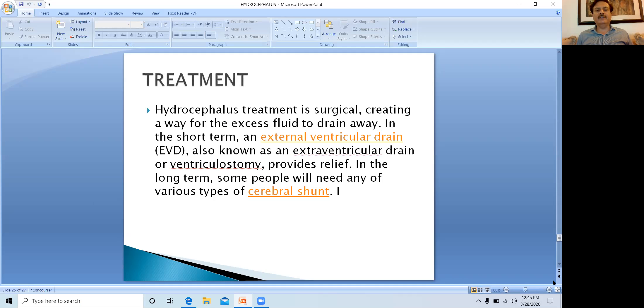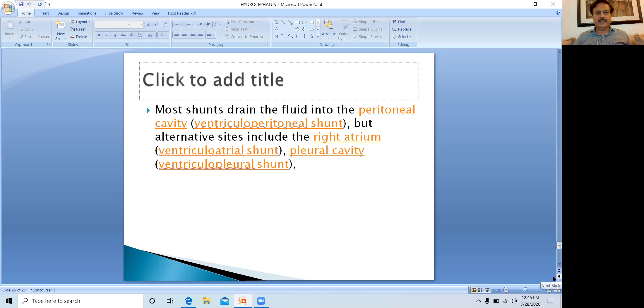Creating a way for the excess fluid to drain away is important. In the short term, an external ventricular drain, also known as extraventricular drain or ventriculostomy, provides relief. In the long term, some people will need various types of cerebral shunts. Most shunts drain the fluid into the peritoneal cavity like ventriculoperitoneal shunt, which is the preferred shunt. Alternate sites include the right atrium with ventriculoatrial shunt or the pleural cavity with ventriculopleural shunt.